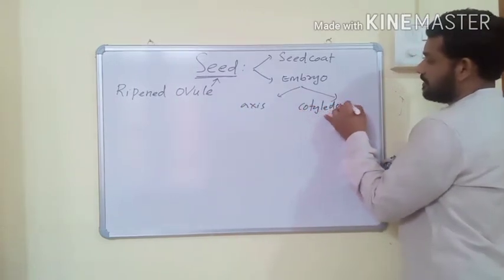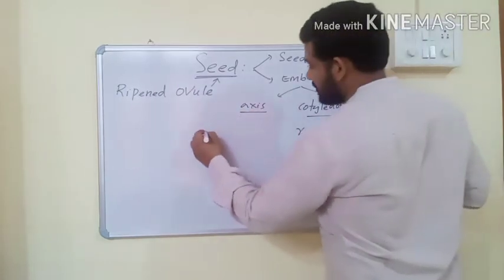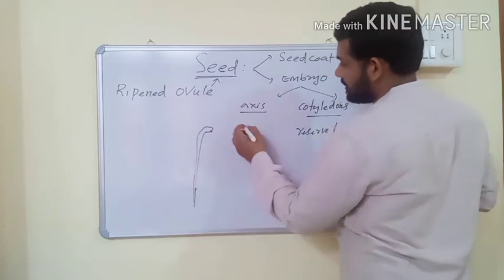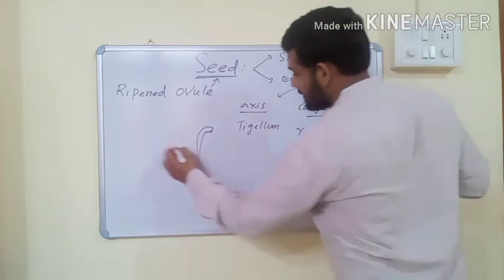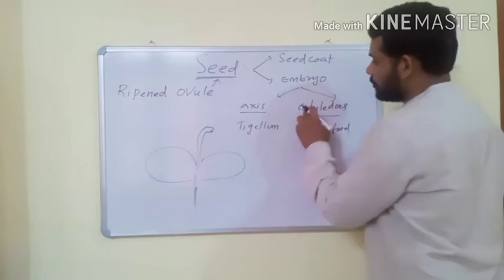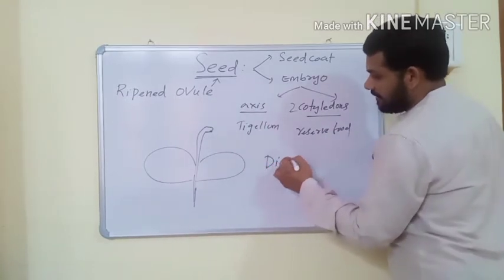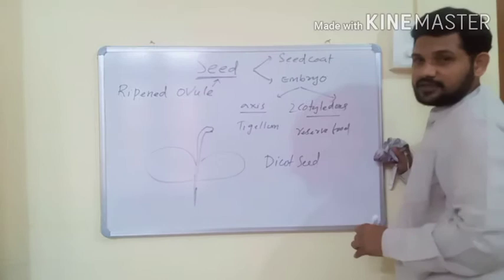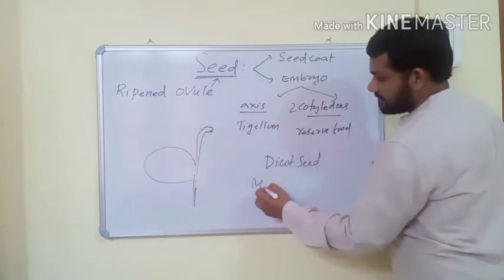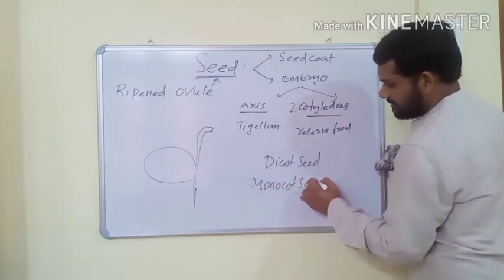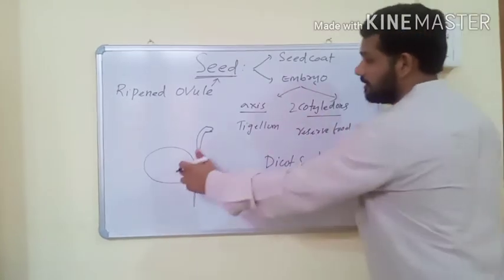If the embryo has two cotyledons, then the seed is known as a dicot seed. If it has only one cotyledon, then the seed is known as a monocot seed. This mainly depends on the number of cotyledons. Examples of dicot seeds: pea, mango, castor, beans. Examples of monocot seeds: rice, wheat, maize - usually grains or cereals belong to monocot seeds.